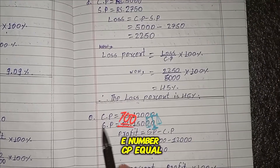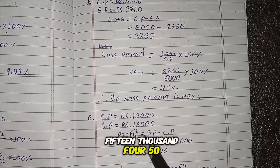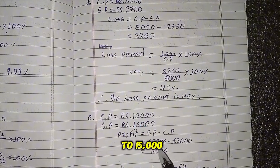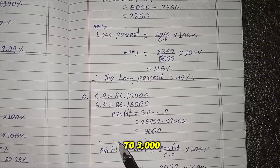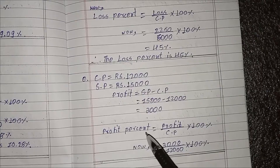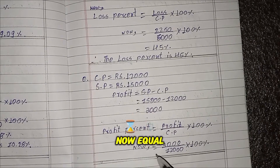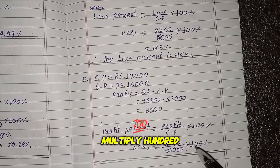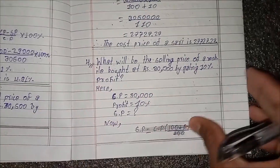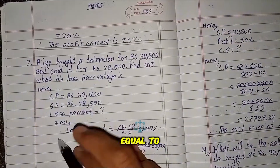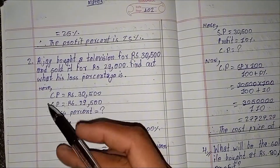Part E: CP equals RS 2,000, SP equals RS 5,000. Profit equals SP minus CP equals 5,000 minus 2,000 equals 3,000. Profit percent equals profit divided by CP multiplied by 100 percent equals 3,000 by 2,000 multiplied by 100 percent equals 25 percent. Therefore, the profit percent is 25 percent.